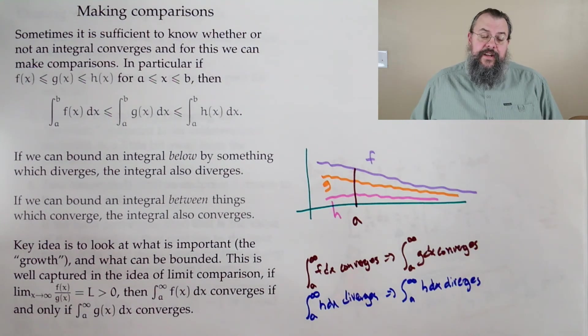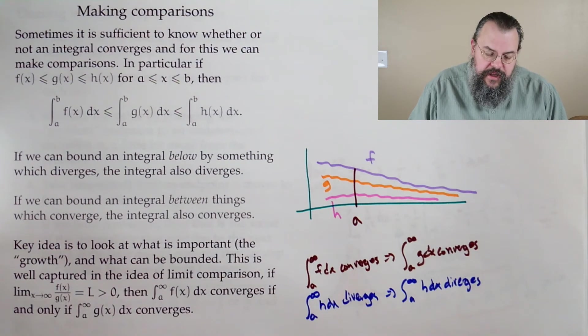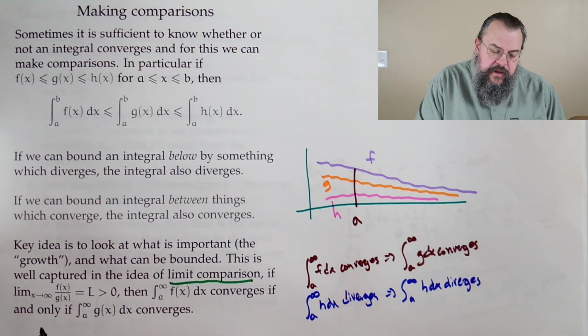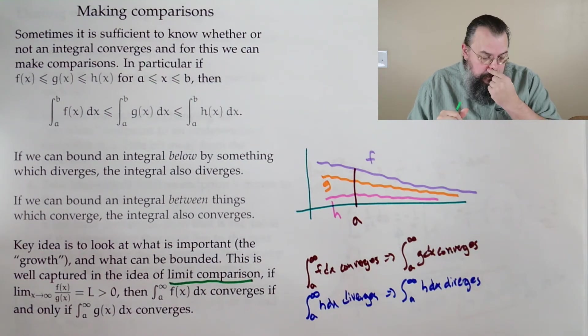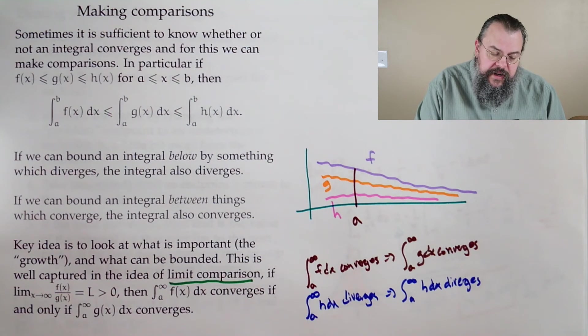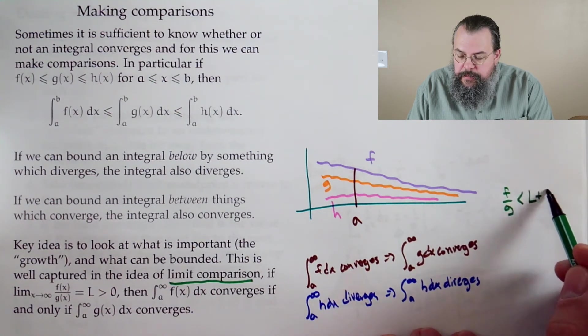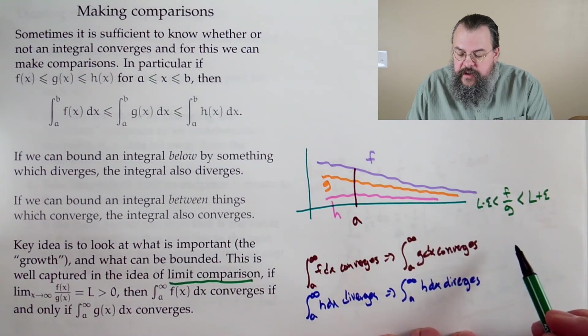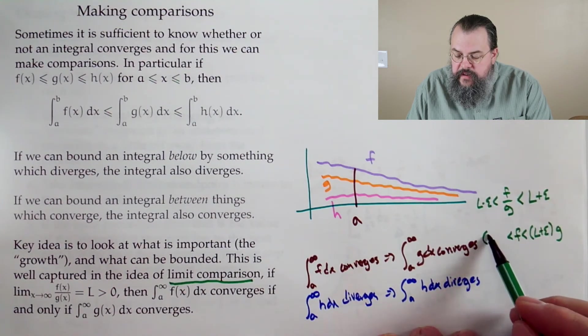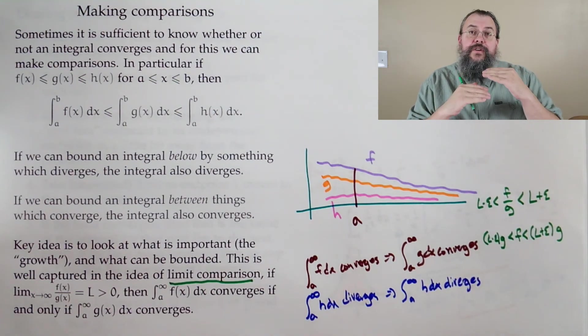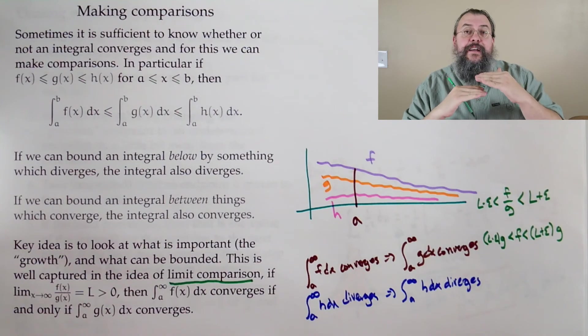There's another notion called limit comparison, which says look at the limit of the ratio of f over g, and suppose that goes to l. If f of x over g of x goes to l, what you have is that f of x over g of x is between some l plus a little bit and l minus a little bit. Or you could say f is less than some multiple of g and bigger than some multiple of g. If the ratio of the two functions converges to some number, as long as it's a positive number, it really says that they act like multiples of one another.